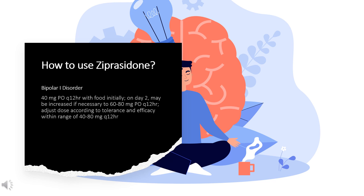For bipolar I disorder — acute treatment of manic or mixed episodes and maintenance therapy as adjunct to lithium or valproate: Acute treatment: 40 mg PO Q12HR with food initially; on day 2, may be increased if necessary to 60–80 mg PO Q12HR. Adjust dose according to tolerance and efficacy within the range of 40–80 mg Q12HR. Maintenance: continue at the same dose at which the patient was initially stabilized; periodically reassess need for maintenance therapy.